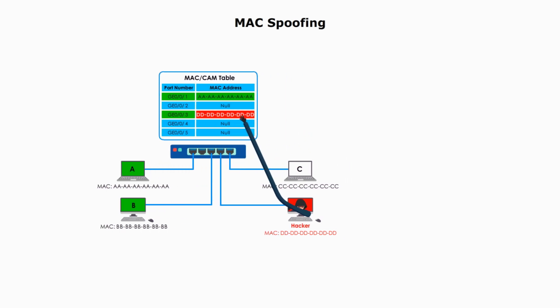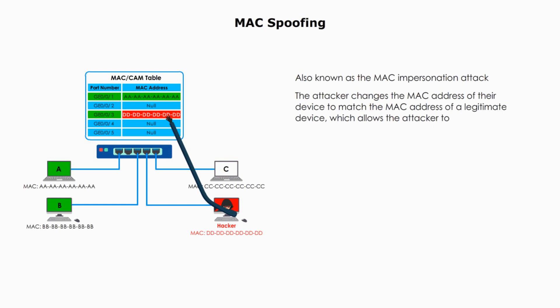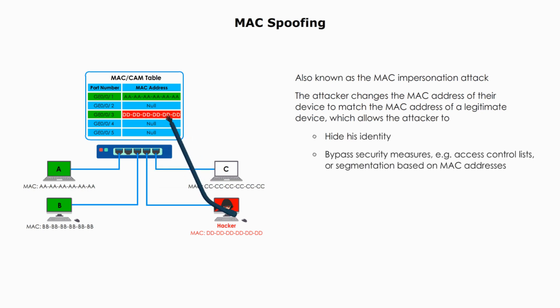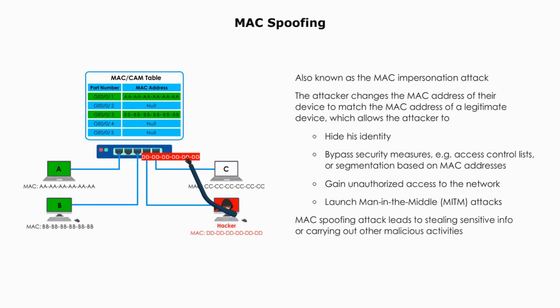The MAC spoofing attack is also known as a MAC impersonation attack. In MAC spoofing, the attacker changes the MAC address of their device to match the MAC address of a legitimate device on the network, which allows them to hide their identity, bypass security measures such as access control lists or segmentation based on MAC addresses, gain unauthorized access to the network, or launch man-in-the-middle attacks to steal sensitive information.